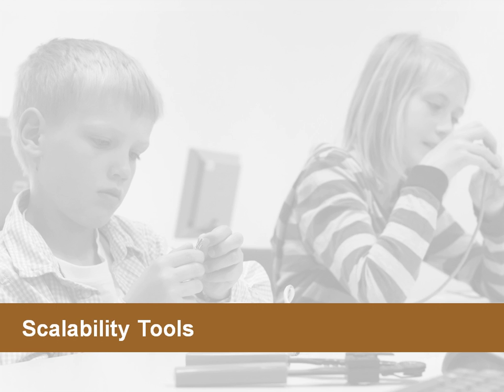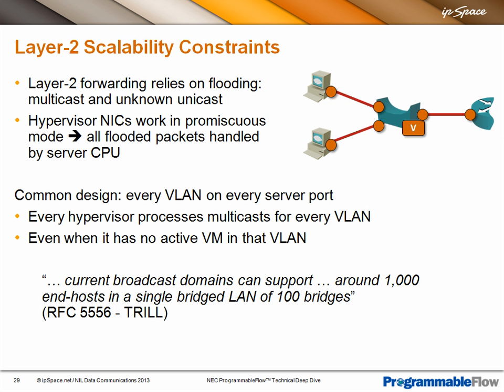Layer 2 networks have serious scalability constraints, and it's not just the spanning tree. The problem is that Layer 2 forwarding relies on flooding of multicasts and unknown unicasts. In a virtualized environment, hypervisors have to put their physical NICs in promiscuous mode, so all hypervisors will get all the flooded packets, burning the hypervisor CPU. People use a common design where they configure every VLAN on every server port, just in case.